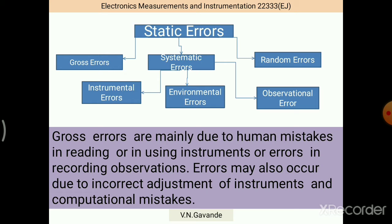Now we will see the errors. There are two types of errors: static errors and dynamic errors. Static errors occur when there are slow changes in time. Now there are three different types of static errors: gross error, systematic errors, and random errors. Systematic errors are again classified as instrumental errors, environmental errors, and observational errors.